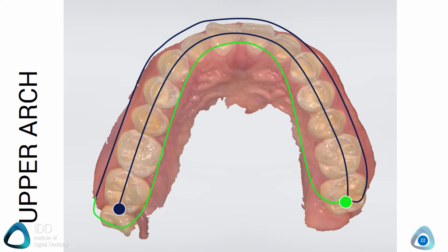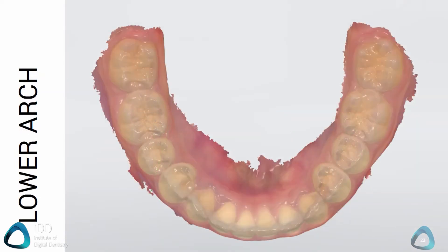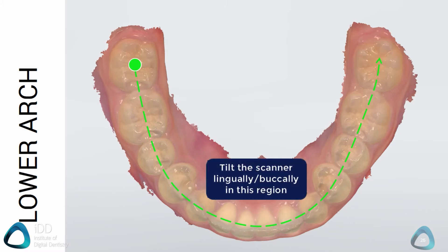There are likely some areas with missing data, which you can easily add to by re-scanning. The bottom arch uses the same protocol as the top. Start posteriorly on the occlusal surfaces, then move towards the occlusal aspect of the molar on the other side of the arch. Again, in the anterior region, you may need to tilt the scanner so you don't lose alignment, which will cause the scan to stop.